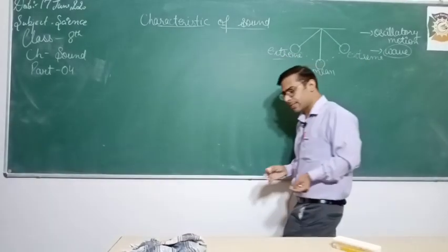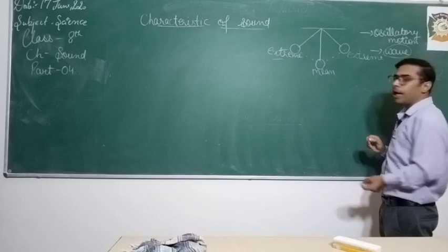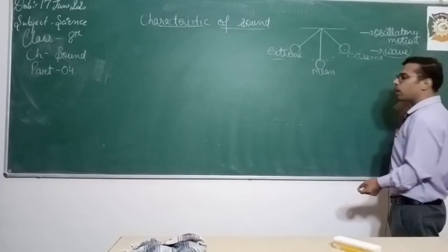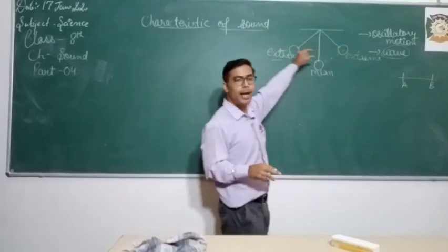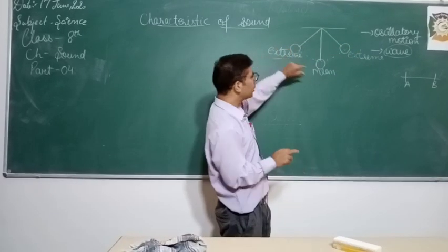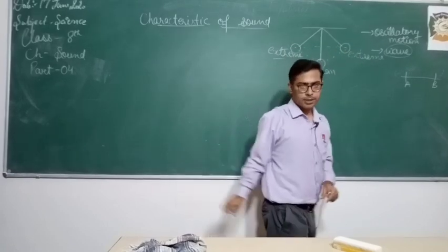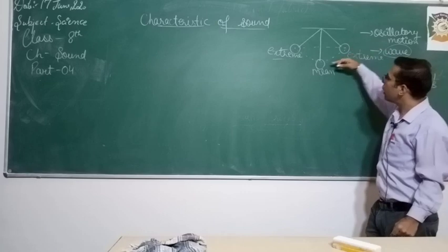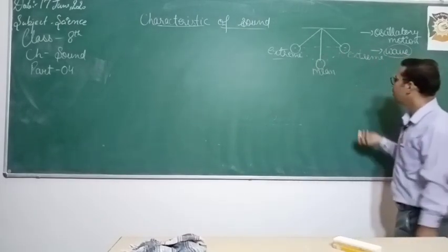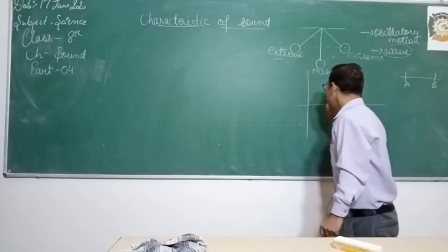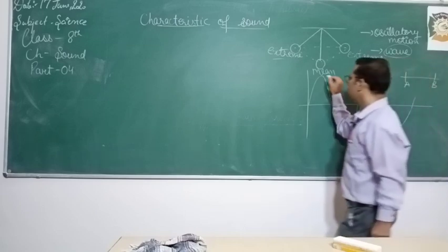Whenever you are learning science, try to learn terms by relating them with something. In mathematics, you studied line segments — a line segment A to B has two extreme or end points. Similarly, the pendulum has extreme positions — the maximum positions it can reach. Both extreme positions are usually the same; if the pendulum goes 5 meters to one side, it also goes 5 meters to the other side. Whenever we draw a wave, it is drawn in a particular way.